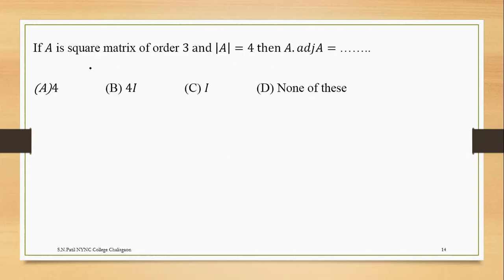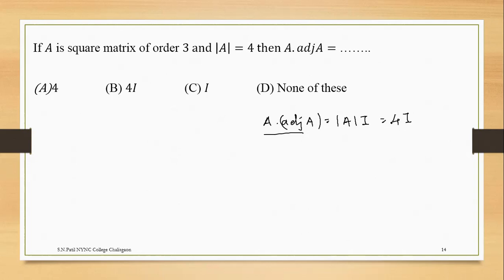If A is a square matrix of order 3 and the determinant of A is 4, then A into adjoint of A equals what? We use the theorem: A into adjoint of A equals determinant times identity matrix. The determinant is given as 4, so the answer is 4 into identity matrix. Since the left-hand side is a matrix, we cannot write simply 4. The correct answer is 4I.